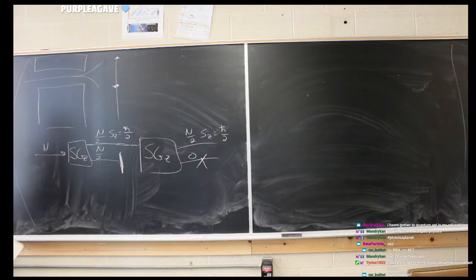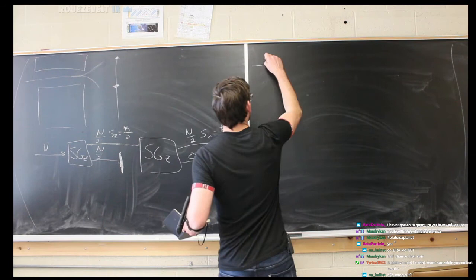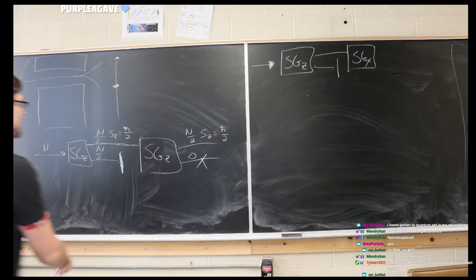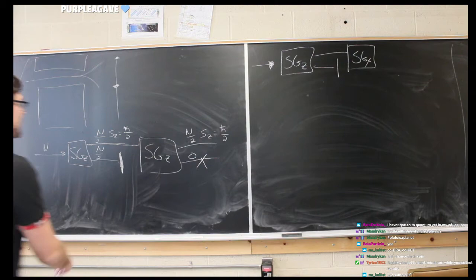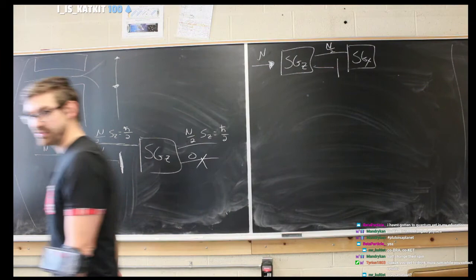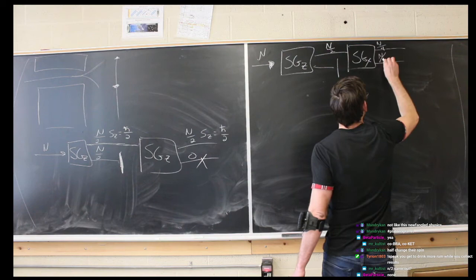Now what if we do something differently? We do the same SGZ setup — block the bottom again — but this time instead of going into an SGZ, we go into an SGX, changing the orientation of the spin. Now if we have N particles going in, block it off, we have N-over-2 spin-up going into the SGX machine. What you'd expect is that it splits in half again — so you have N-over-4 and N-over-4.